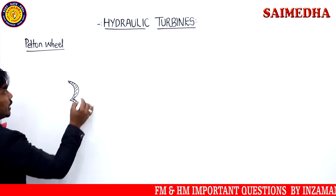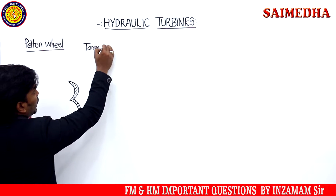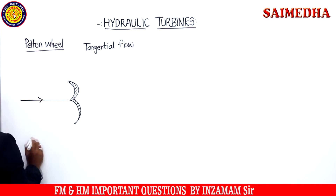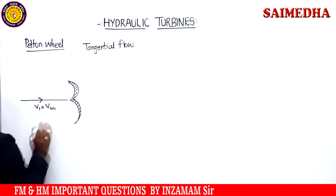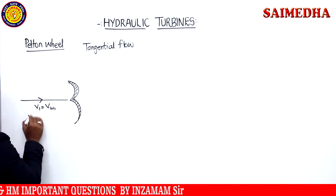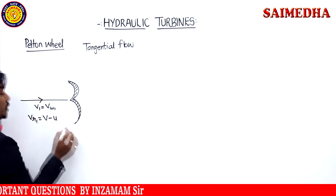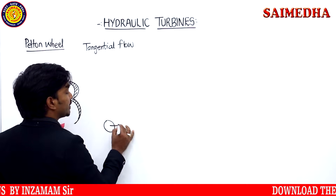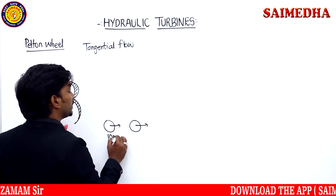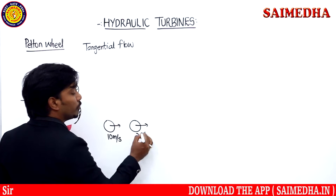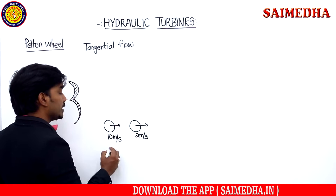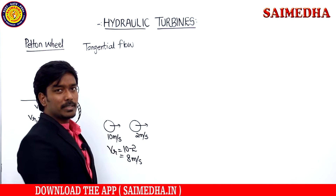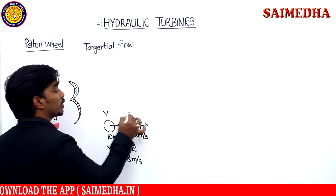The first and foremost important turbine is the Pelton wheel turbine, which has already appeared in previous semester examination questions. Observe the velocity diagram I am drawing now. Inside the Pelton wheel turbine you have a double hemispherical blade. Observe how the water flows — the Pelton wheel is a tangential flow turbine. Water comes in tangentially, so V1 equals Vw1, and Vr1 equals V1 minus U (V minus U), because when two bodies travel in the same direction, the relative velocity is the difference — for example, 10 m/s minus 2 m/s equals 8 m/s.